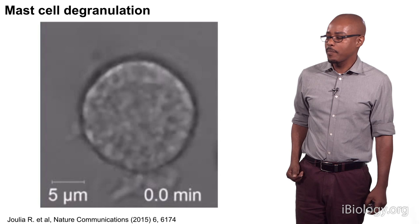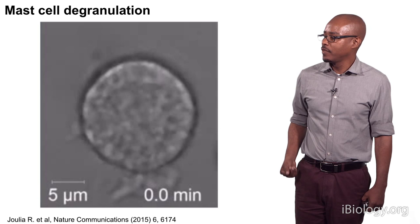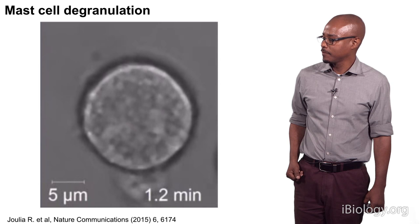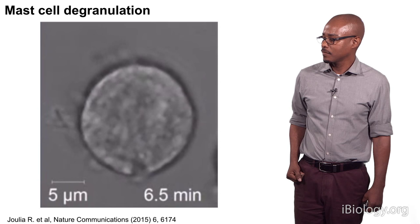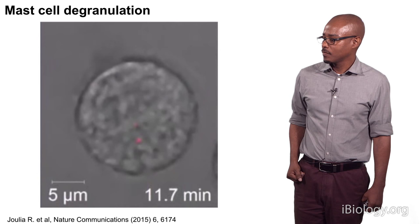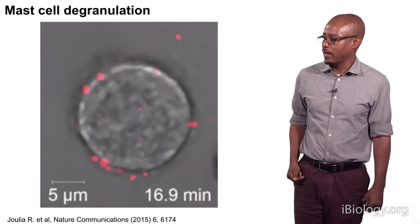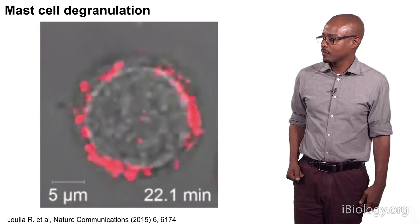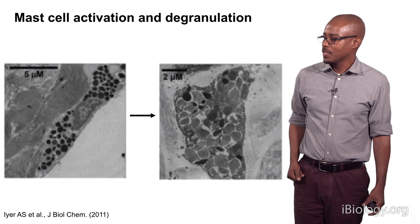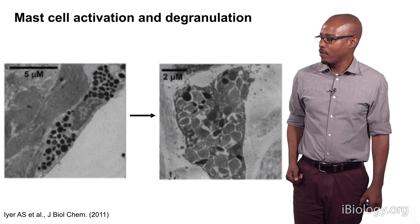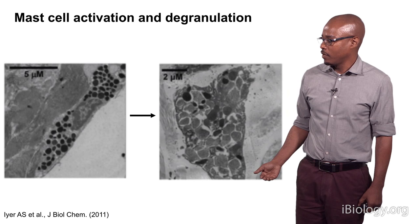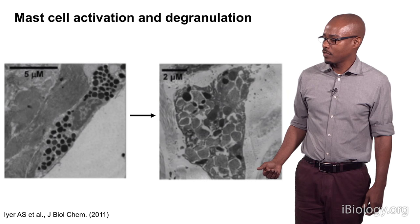The next thing that happens after activation is degranulation. In this video, the mast cell is activated, and as the granules are released, they pick up a dye shown in red that allows you to visualize the degranulated granules. You can see the mast cells degranulate — the granules reach the cell surface, pick up the dye, and are released. Once those granules have been released, the cell looks empty. Here's an electron micrograph showing a non-degranulated mast cell on the right and a degranulated mast cell on the left, where the granules are less dark, indicating they've released their contents.